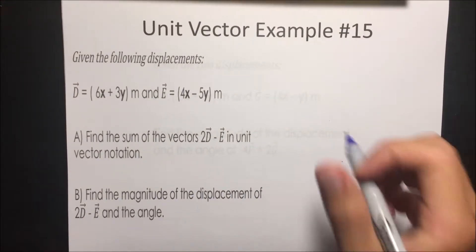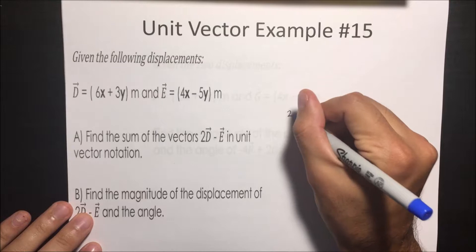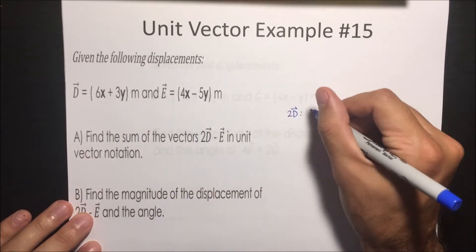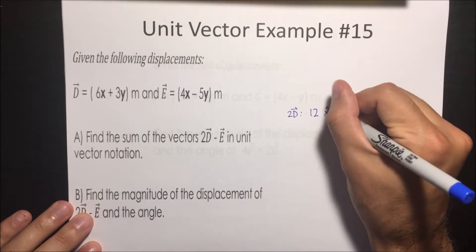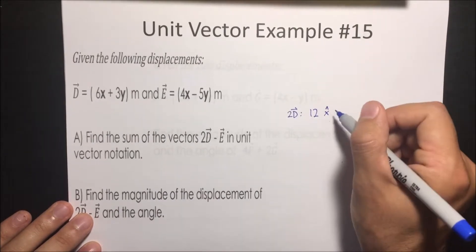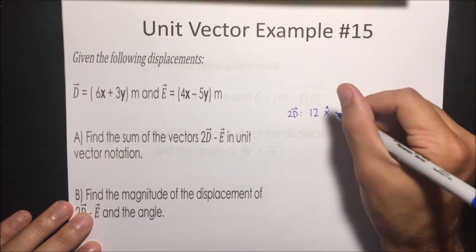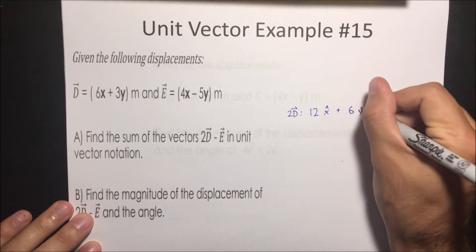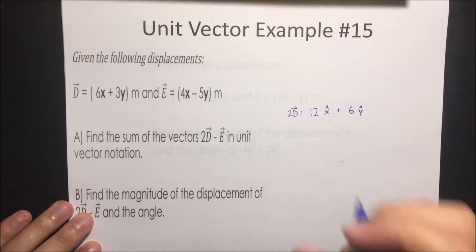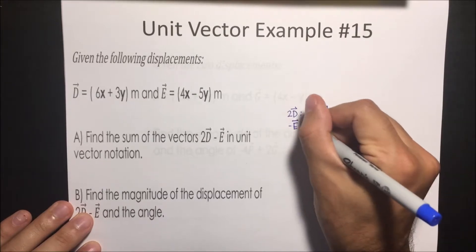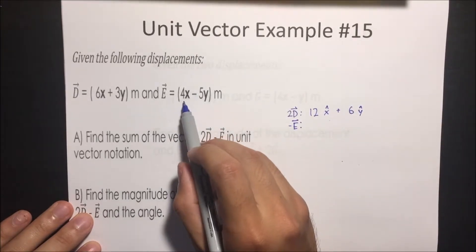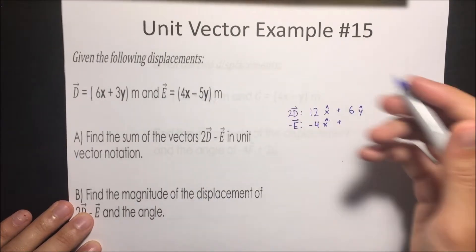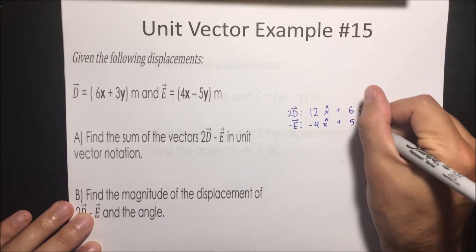I like to first work out 2D. 2D means it's going to be 12 in the x direction — I'll write that as x̂ to show it's 12 in the x direction and not just another variable — plus 3y times 2, which is 6 in the y direction, written as ŷ. Now for minus E, we flip all the signs, so it's negative 4 in the x direction plus positive 5 in the y direction.